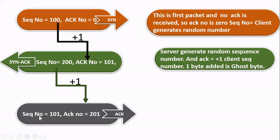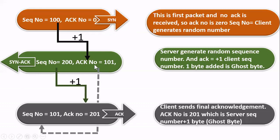The sequence number you see is the same as the acknowledgement number that was received. This is how the calculation of sequence number and acknowledgement number happens in a three-way handshake. However, the sequence number and acknowledgement number calculation is different when you go further after the three-way handshake — there is a length that gets added. If you will comment, I can make a video on that also. Now let's see the packets in Wireshark.